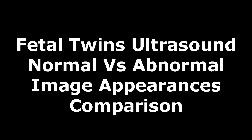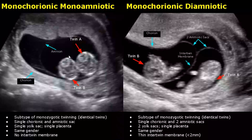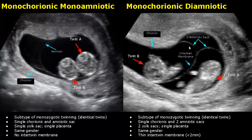Hello everyone, this is Dr. Sam and today we will study twins ultrasound. Twins are classified as monozygotic or dizygotic based on the type of fertilization. In monozygotic twinning, a single egg is fertilized by a single sperm.